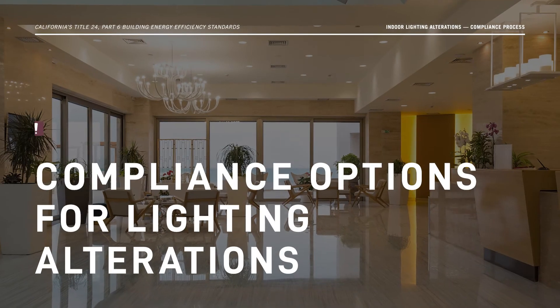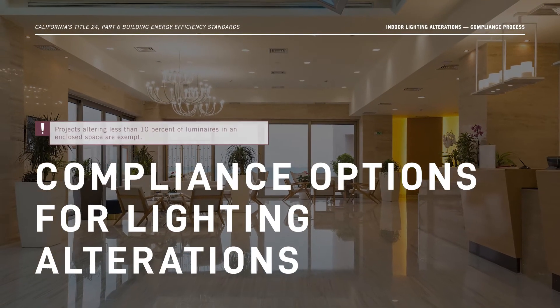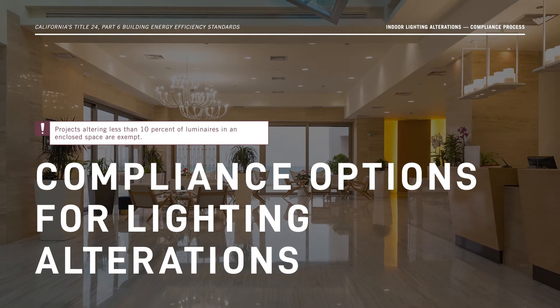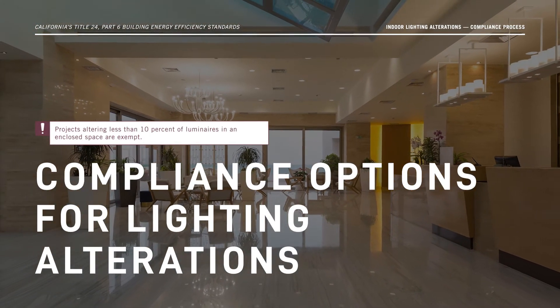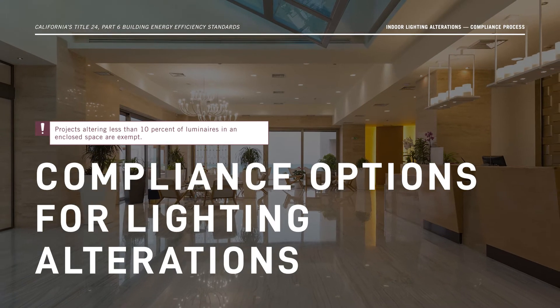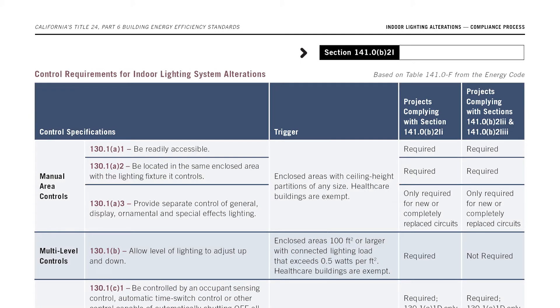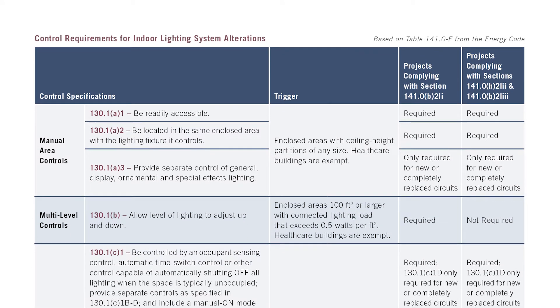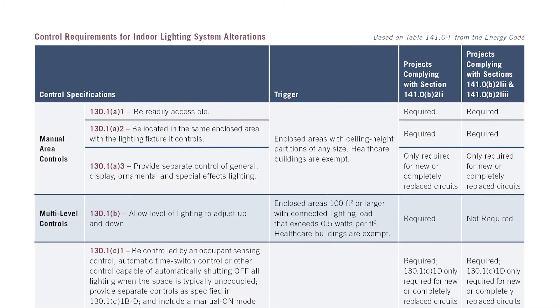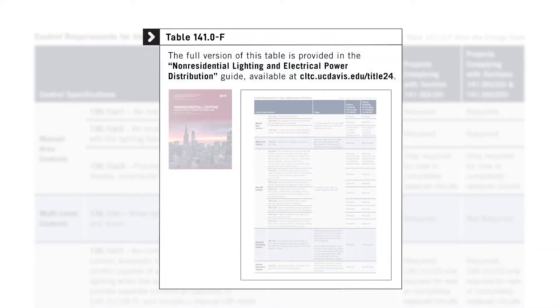Now let's talk about the three compliance pathways for alterations to 10% or more of the luminaires in an enclosed space. These pathways are established in Section 141.0b2i and Table 141.0f of the Energy Code.